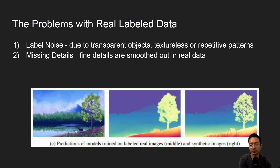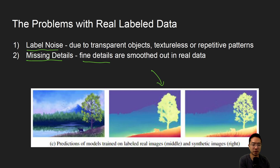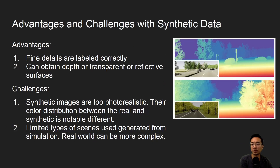The problem with real label data is that there's usually labeled noise — due to transparent objects, textureless surfaces, or repetitive patterns, the labeling can be noisy. There's also missing data, and very fine details are often smoothed out. You can see in the example that the grass or flowers in the real image look almost like a Gaussian blur has been applied, whereas in the synthetic image much more detail is visible, including the leaves of trees.